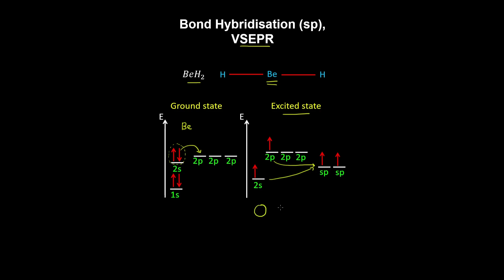So they look something like this, where s orbitals are spherical shaped and p orbitals are dumbbell shaped. The resulting orbital behaves 50% like an s orbital and 50% like a p orbital.